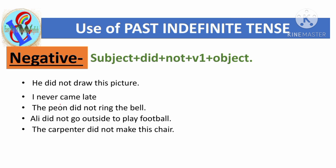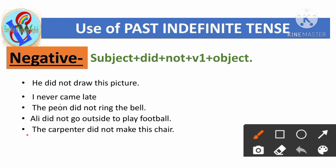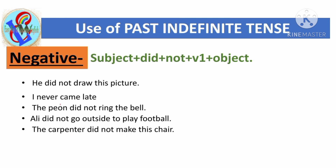'The carpenter did not make this chair.' Here 'the carpenter' is the subject, 'did not' is used because it's a negative sentence, then the first form of the main verb 'make' — meaning to make — and 'this chair' is the object.